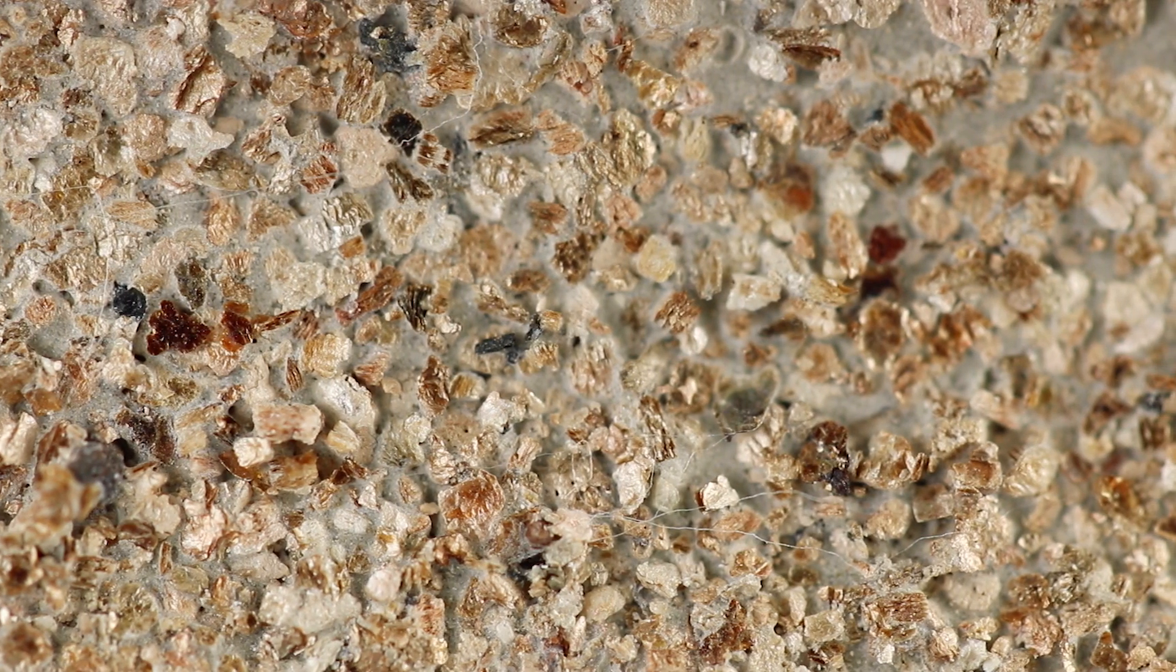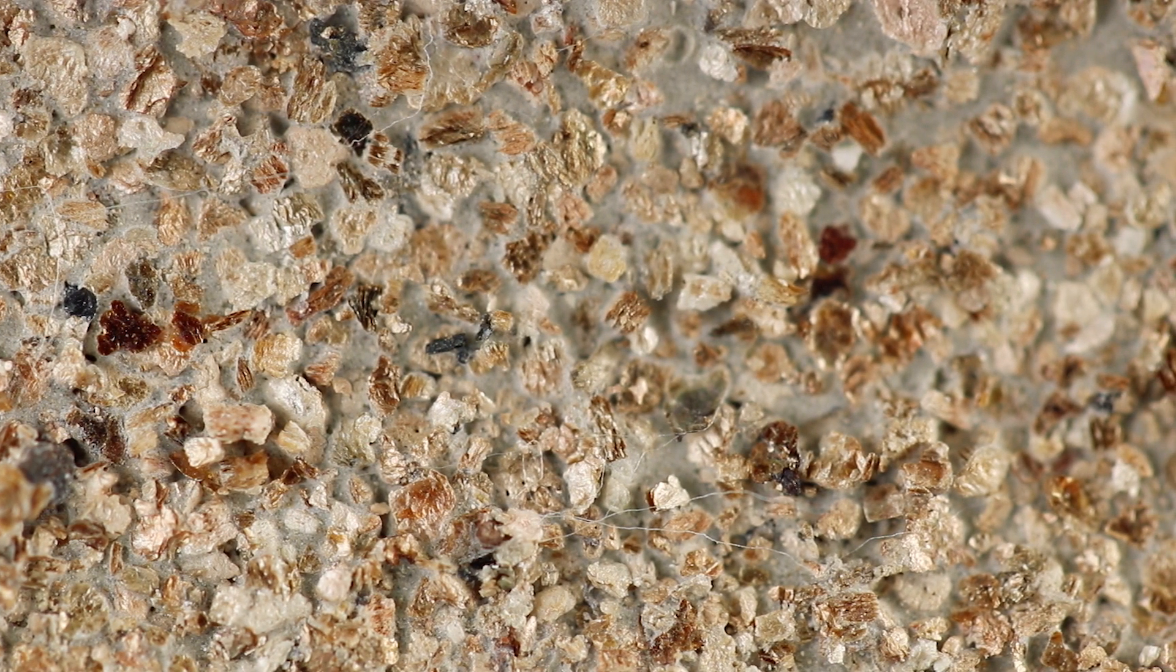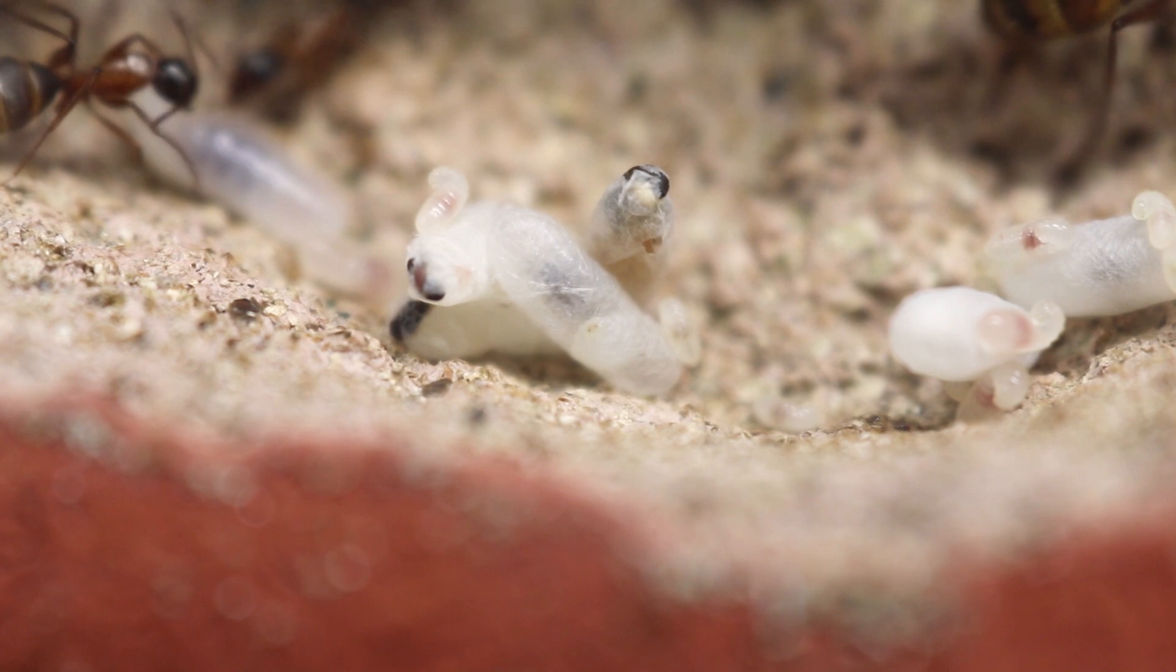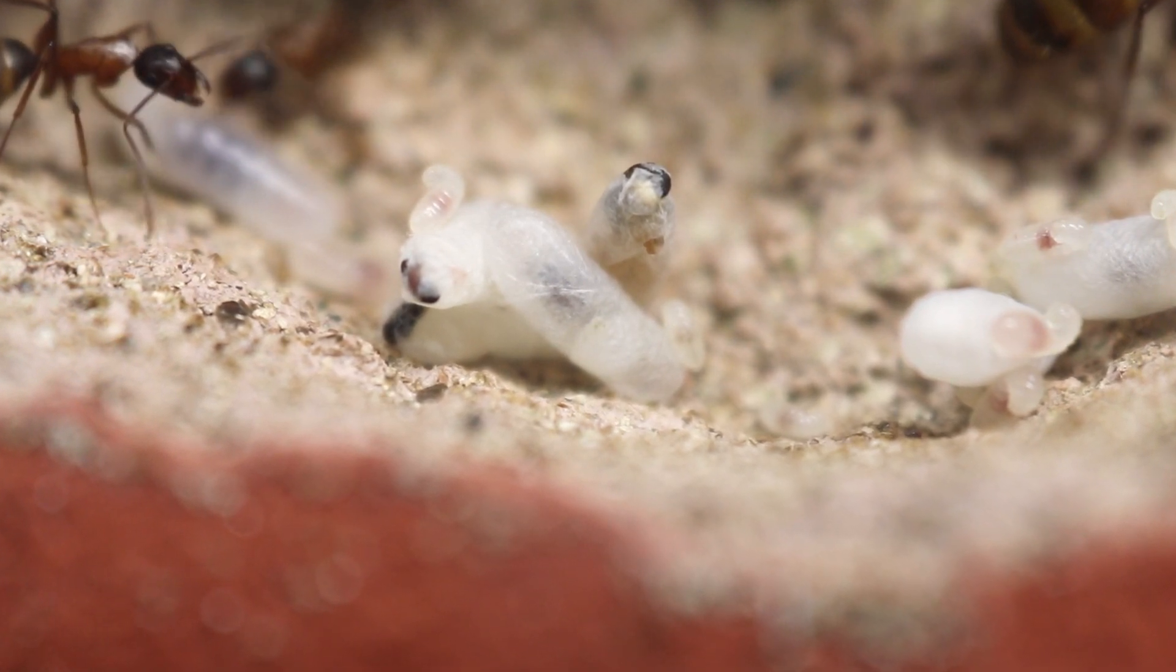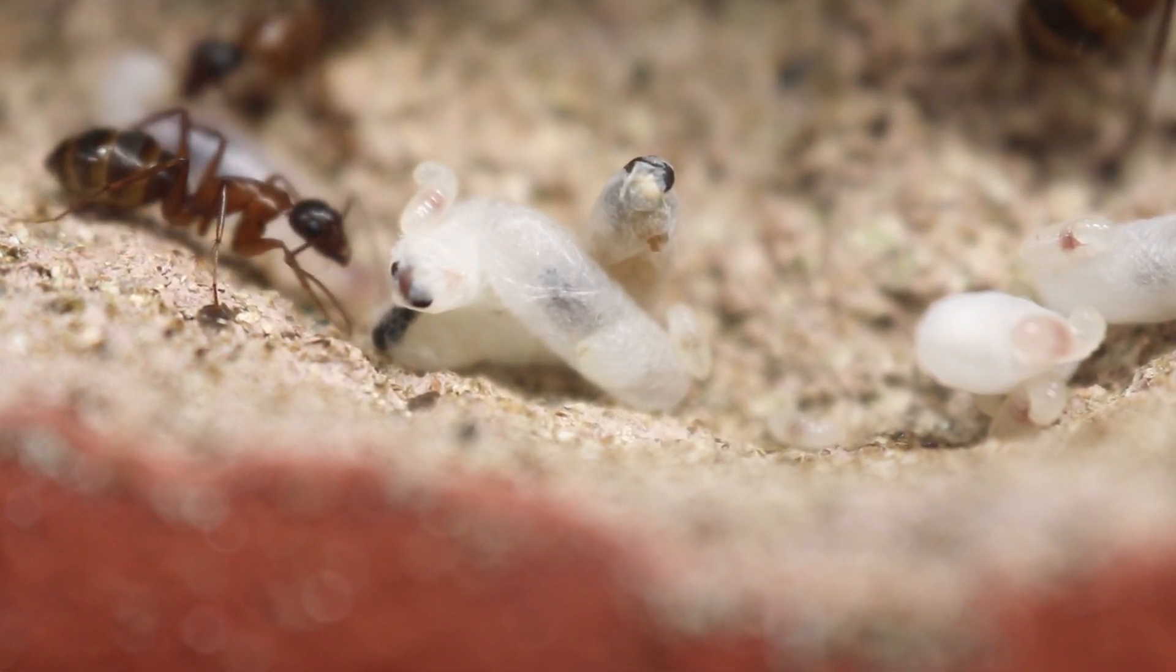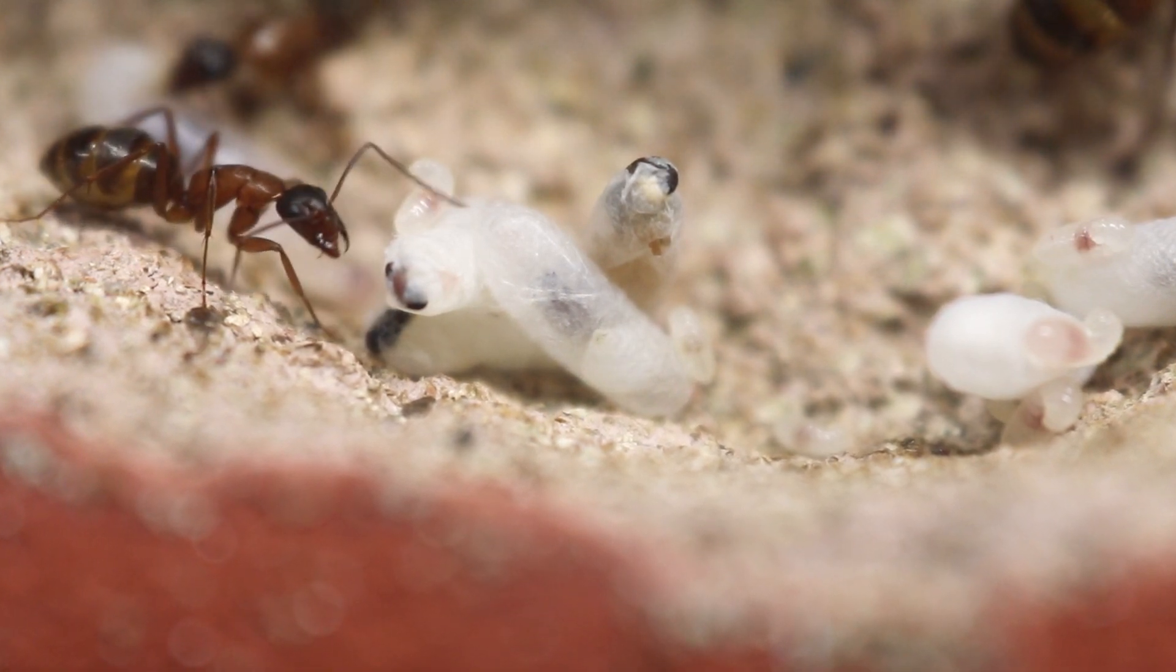This allows ants to have better footing in the nest. The substrate also helps to facilitate cocoon spinning, which is a critical developmental step in some ant genera, like Formica, which struggle to form cocoons on the smooth surface of a test tube.